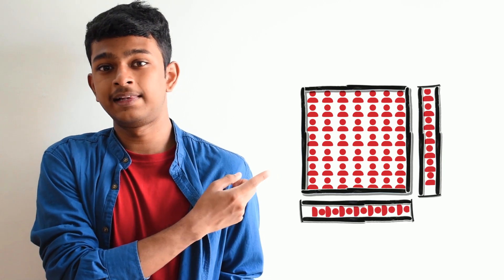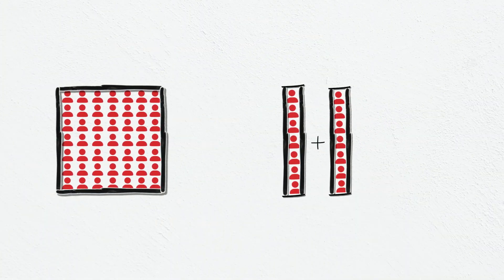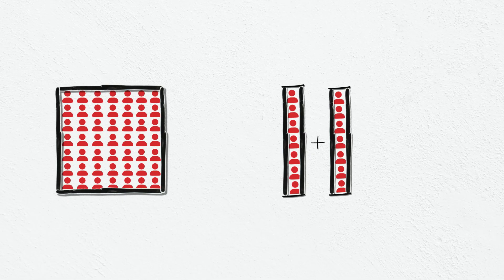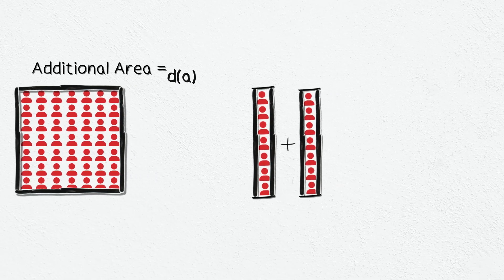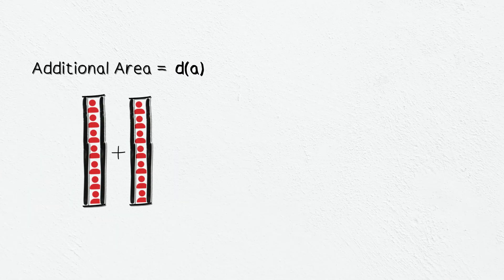To see things more clearly, let's put the number of infected people inside a two-dimensional box. After a certain amount of time, this value will naturally increase. Now it may seem obvious to you that the growth in the infected population will be equal to the growth in the area of this box, which is the sum of these additional boxes.